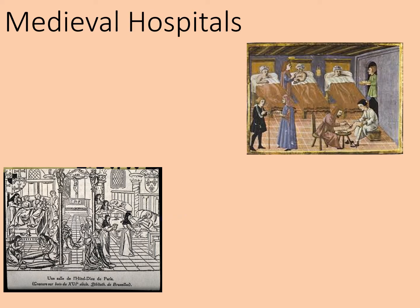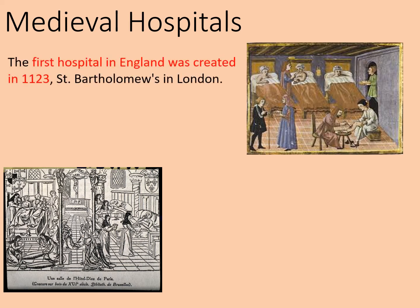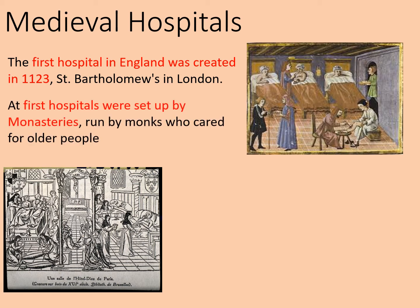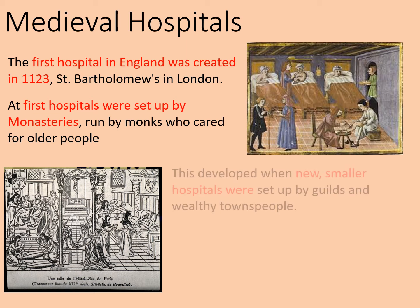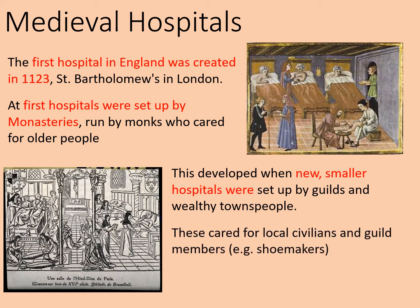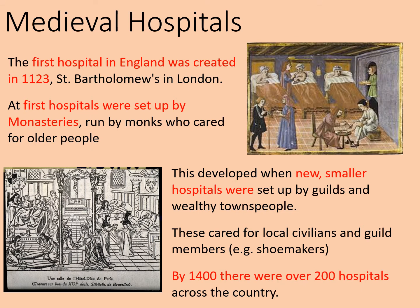We're going to spend a little more time on medieval hospitals and study some sources. The first hospital in England — or at least the first recorded one — was created in 1123: St Bartholomew's in London, which in one form or another is still going today. At first, hospitals were set up by monasteries, run by monks who cared for older people. This developed when new, smaller hospitals were set up by guilds and wealthy townspeople, caring for local civilians and guild members. By 1400, there were 200 hospitals across the country, so if you lived in a larger town or city you probably had access to some sort of hospital.